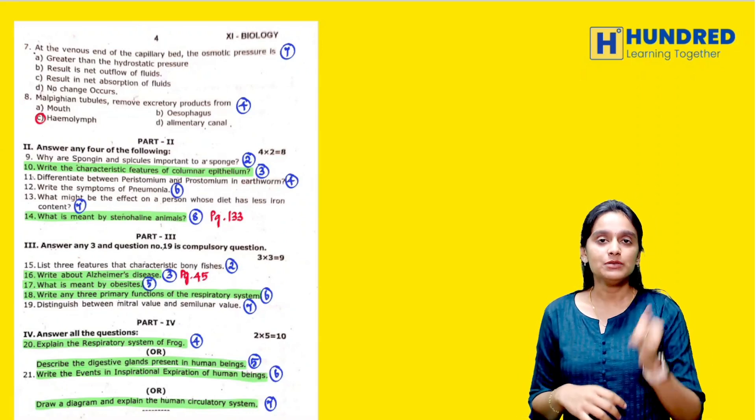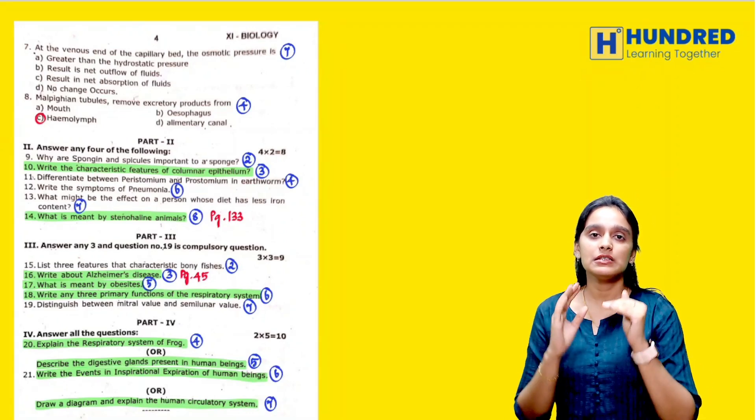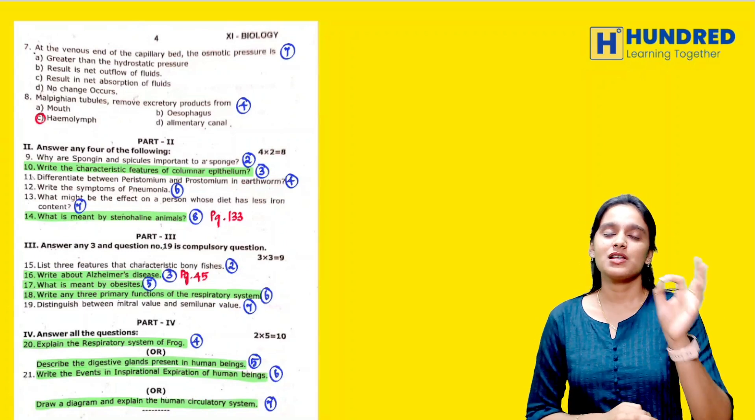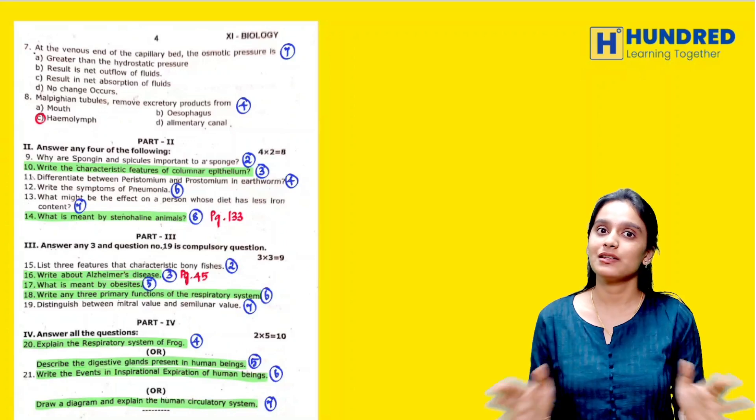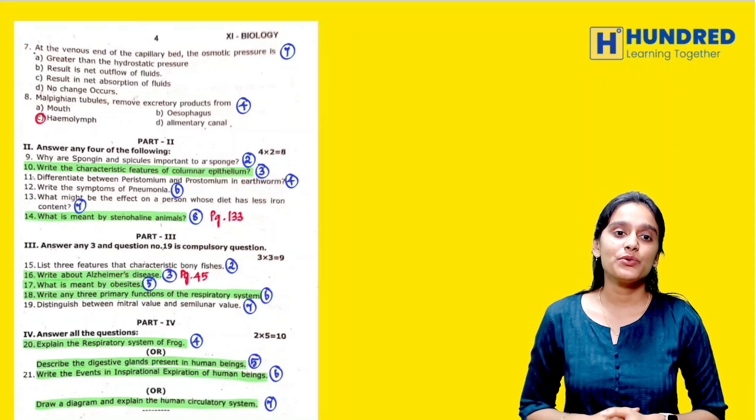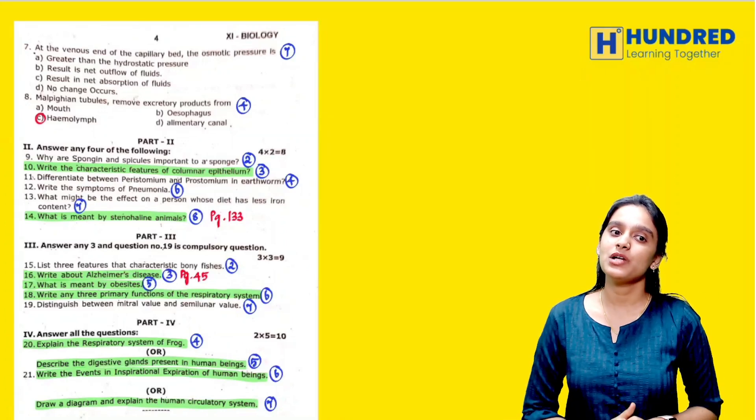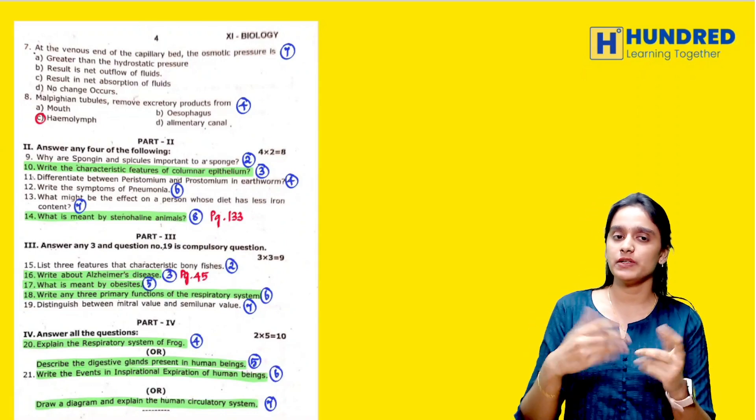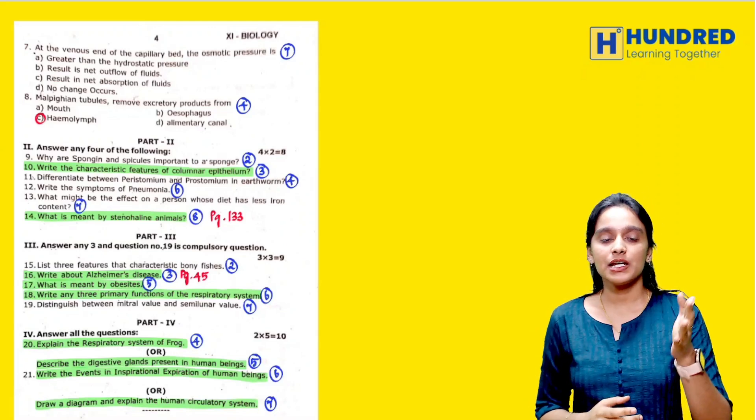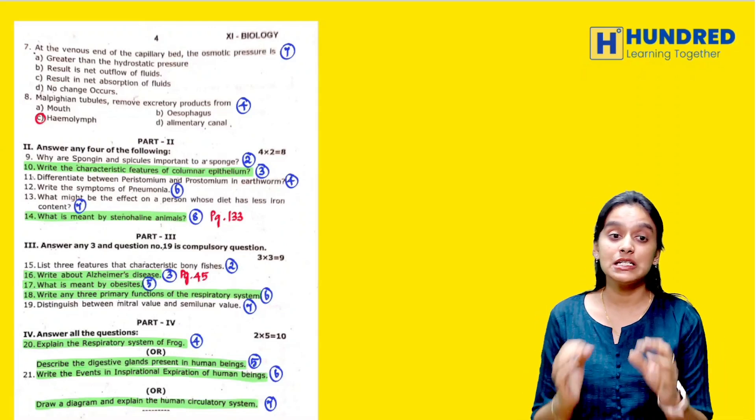Tabulation is not point-wise, you can see 2 marks, 3 marks, 5 marks, there are many chances. Distinguish between mitral valve and semilunar valve, this is a compulsory question and a book back question.